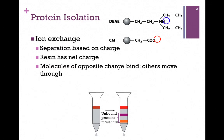In our illustration at the bottom of the slide here, we have our column. We've applied our mixture of proteins as this brown band at the top of the column. And as the buffer moves through by gravity flow, molecules of opposite charge will bind to the column.